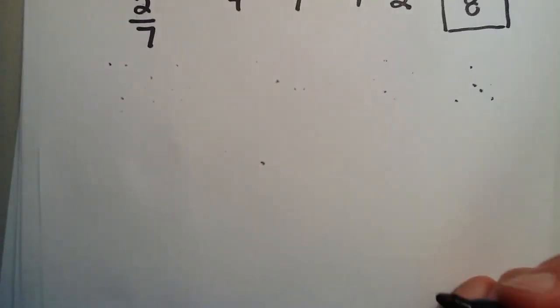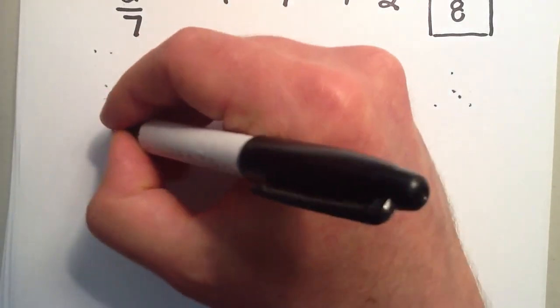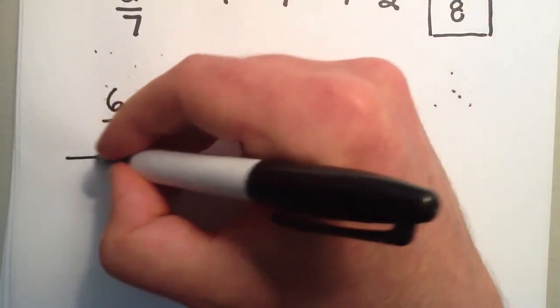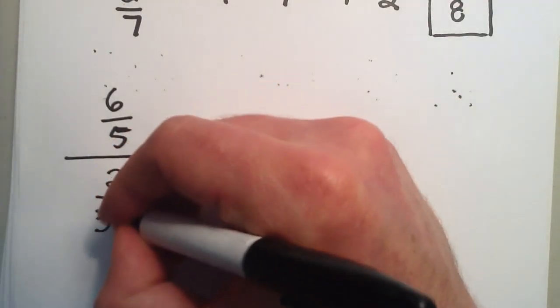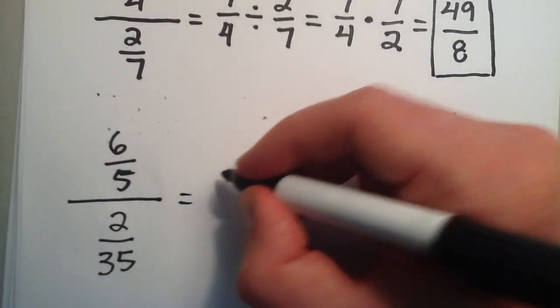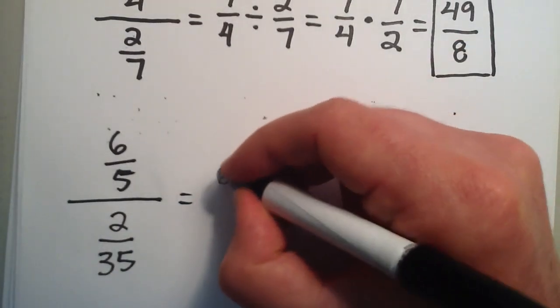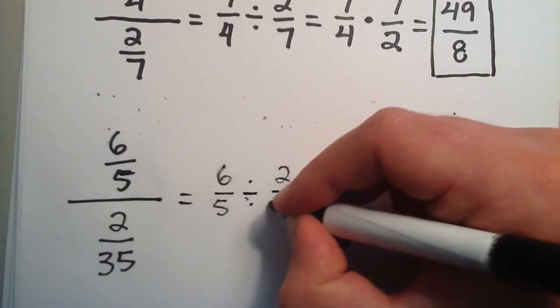We'll do one more demonstration and then I'll wrap it up here. Let's try 6 fifths and divide that by 2 over 35. So let's just rewrite this in a better form: 6 over 5 divided by 2 over 35.